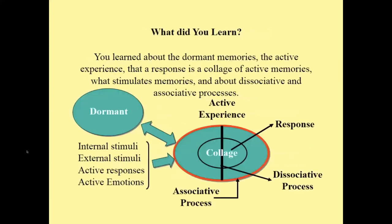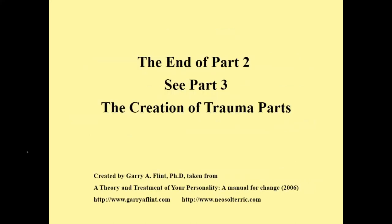What did you learn? You learned about dormant memories, the active experience, and that memories move back and forth between dormant and active memories. You also learned that a response is a collage assembled in the active experience, and that the main personality is created from the autobiographical memory. You learned what stimulates memories and that stimuli are important in therapy. You learned about the basic neural structure and about dissociative and associative processes. This is the end of part two. If you've understood everything, go on to part three. Otherwise, replay part two to pick up what you may have missed.